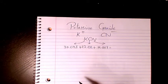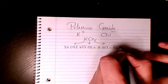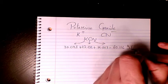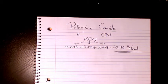So that makes it 39.098 plus 12.011 plus 14.07, that makes it 65.116 grams per mole. So that's the molar mass or molecular weight of potassium cyanide.